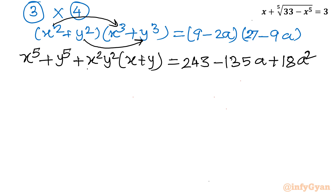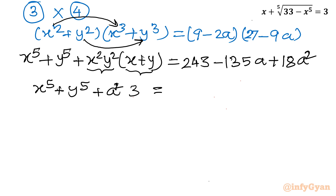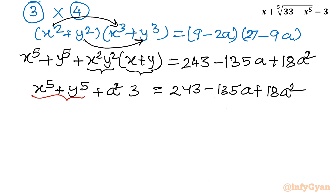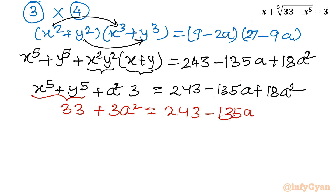Putting xy equal to a and x plus y equal to 3, we apply: x^5 plus y^5 plus a^2 times 3 equals (9 minus 2a)(27 minus 9a), which gives 243 minus 135a plus 18a^2. Now putting the value of x^5 plus y^5, which is 33: 33 plus 3a^2 equals 243 minus 135a plus 18a^2.